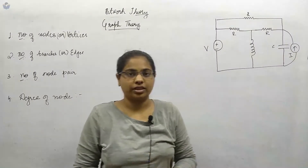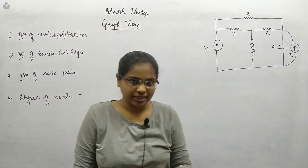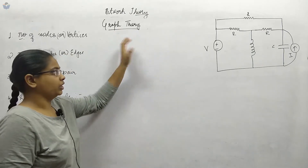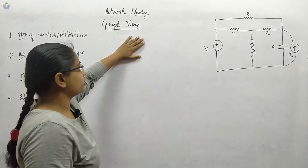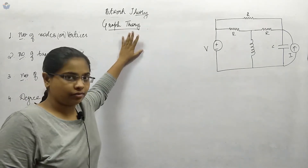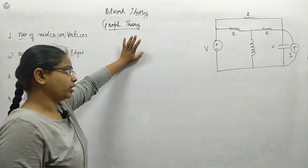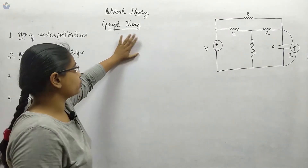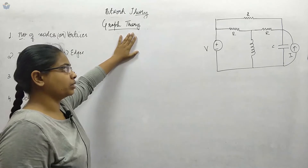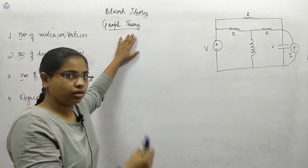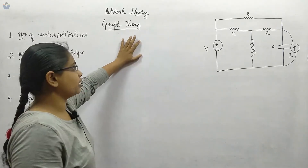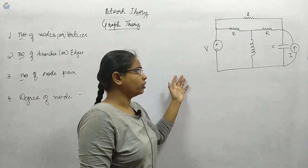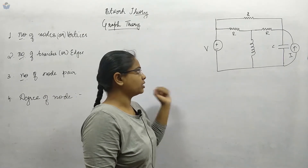Hello everyone, welcome to Decentric. In this lecture we will start with our new chapter, that is graph theory. This is not so important from the GATE point of view, because there are very low chances of it being asked in the GATE examination. But if you consider EEC, ISRO, or BARC exams, these types of questions may be asked for 1 mark or 2 marks.